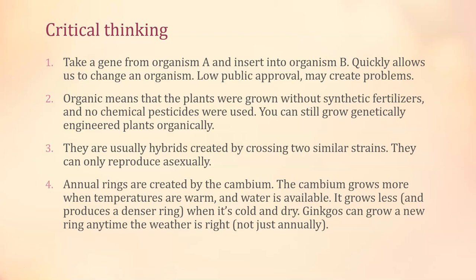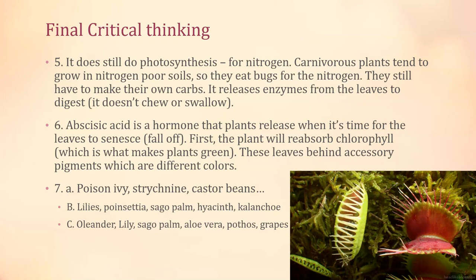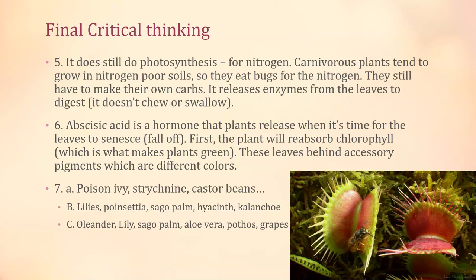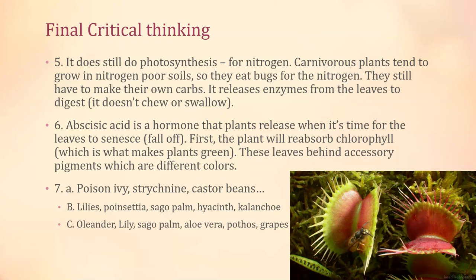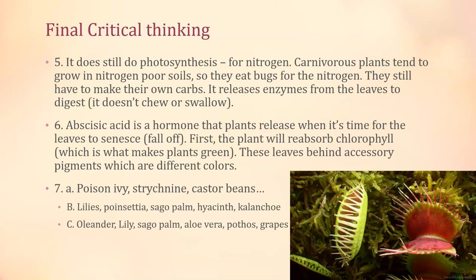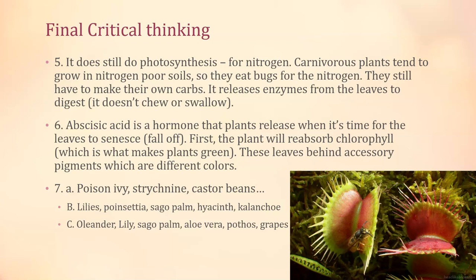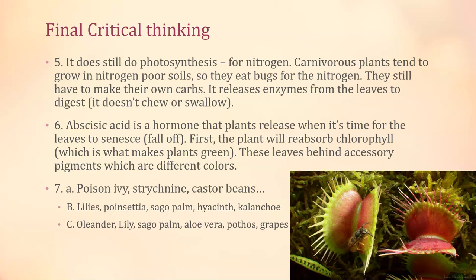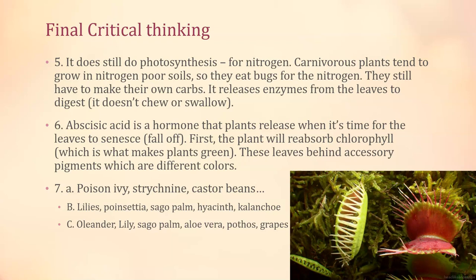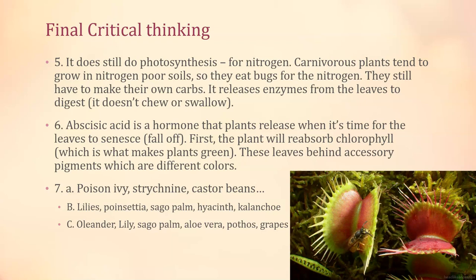Question five: a Venus flytrap is a carnivorous plant — does it do photosynthesis? Yes it does; it's still a green plant with chlorophyll and makes its own food. However, most carnivorous plants grow in nitrogen-poor soils. You need nitrogen to make proteins and nucleic acids, so these plants eat animals to get the nitrogen, not carbohydrates. How does it catch insects? If an insect triggers a trichome inside the leaf, it makes water move quickly to snap the leaf shut, trapping the insect inside.